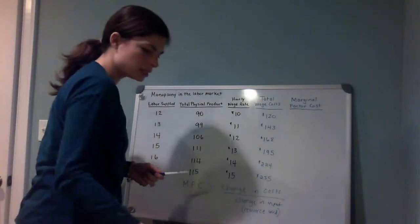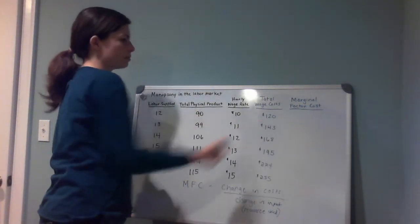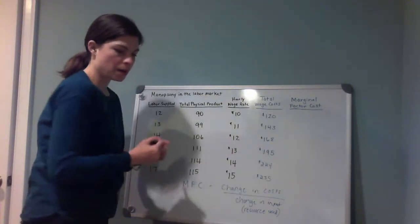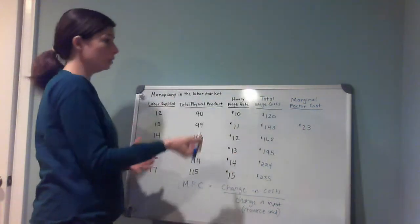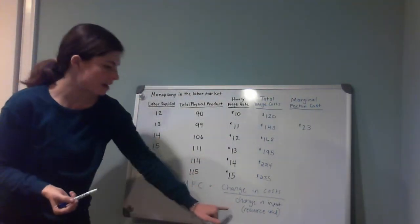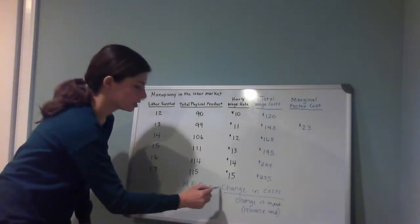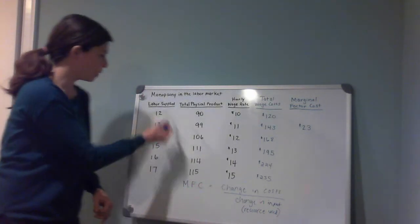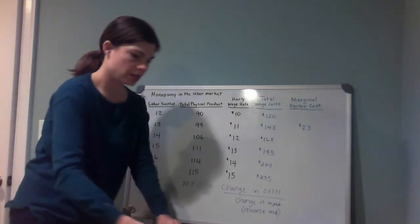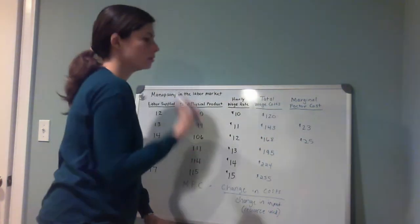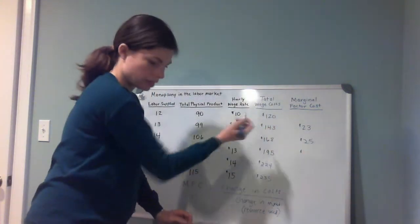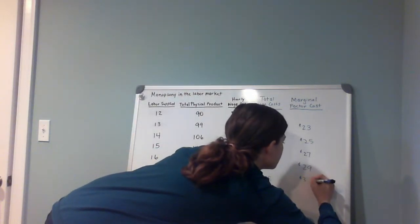Since this is marginal, like a lot of other things we've done, you're just going to subtract one row from the next. It went up $23, so you spent $23 more on labor. We're dividing by one since we go up by one each time, so we're really just looking at the top portion. Then it goes up by $25 to get to the next level, then $27, and last but not least $31.